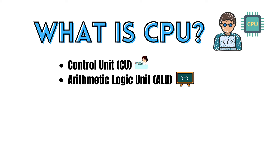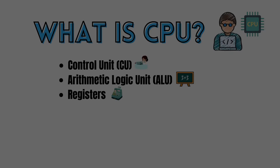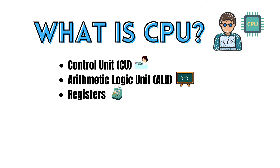Let's learn what the register unit does in the CPU. Registers are small, high-speed storage locations within the CPU that are used to store data temporarily during processing. They play a crucial role in the execution of instructions and help in improving the overall speed of the CPU.